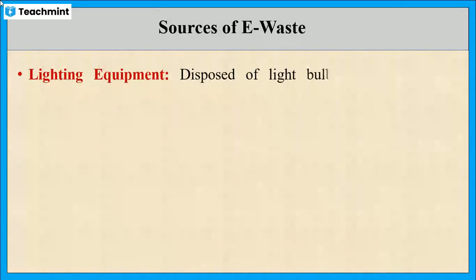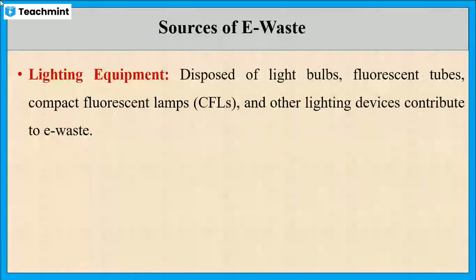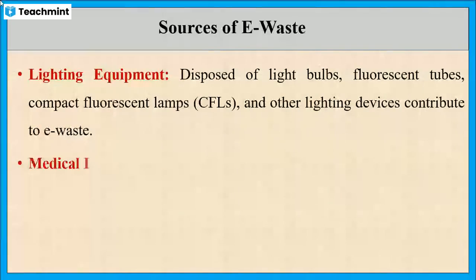Lighting equipment such as light bulbs, fluorescent tubes, fluorescent lamps, and other lighting devices contributes to e-waste. These devices contain hazardous materials such as mercury that require proper disposal. The next source is medical devices.